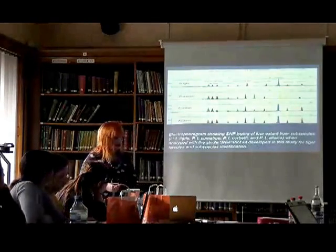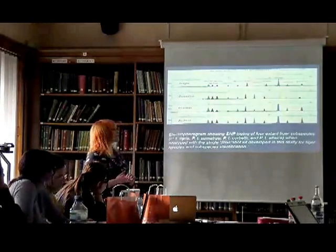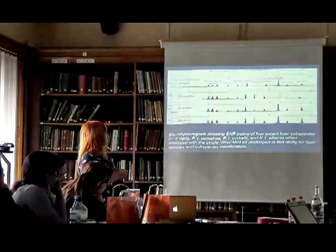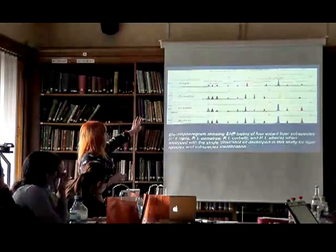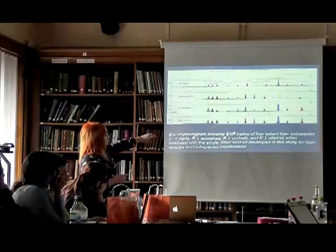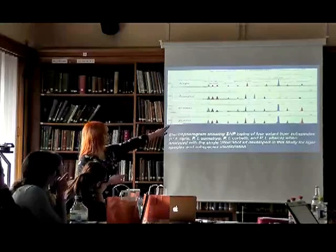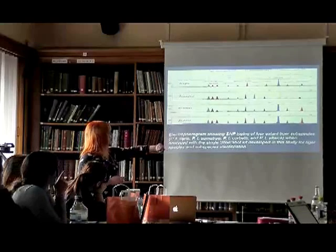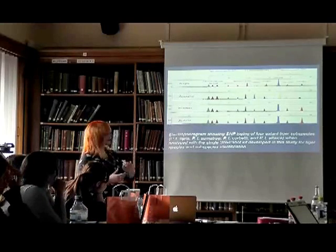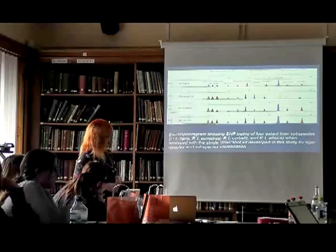Here's an example — quite a good one — you can see the ones that are tiger-specific all look very similar, and then you can see the differences between tigers and the Sumatran tiger. It's quite an easy way to see how the SNPs differ between each species.